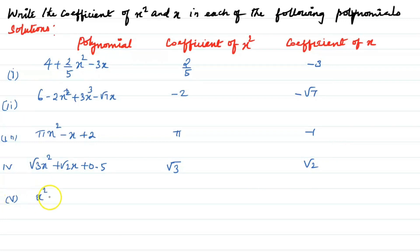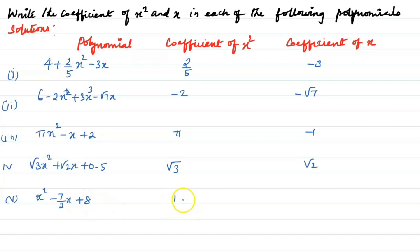Fifth: x² - (7/2)x + 8. The coefficient of x² is 1 and the coefficient of x is -7/2. Thank you.